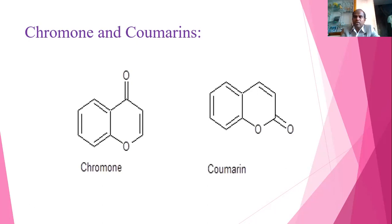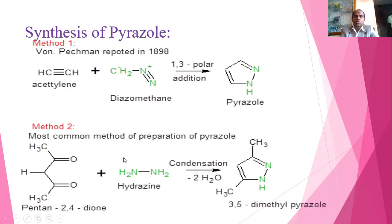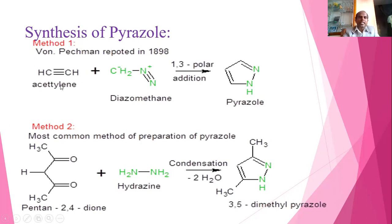Pyrazole is a 5-membered ring with two nitrogens at adjacent (1,2) positions. One method of synthesis involves passing acetylene gas into a cold solution of diazomethane, where a 1,3-dipolar addition takes place forming pyrazole. However, acetylene is a gas and diazomethane is stable only at low temperatures, making this method inconvenient.